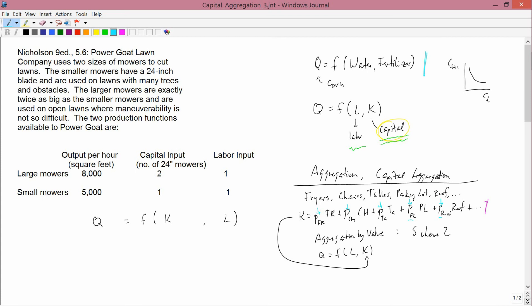Let's move again back to the left-hand part of the board. This problem statement is problematic. Nicholson writes here, the two production functions are... Firms don't have two production functions. Firms have one production function. A firm has a production function which describes all of the possibilities that it has open to it for producing output.